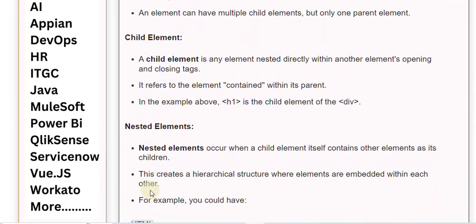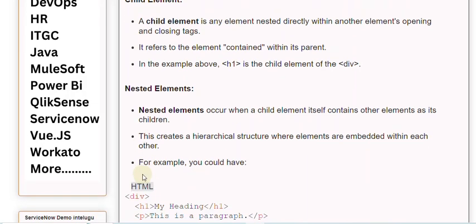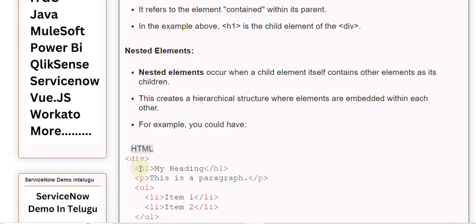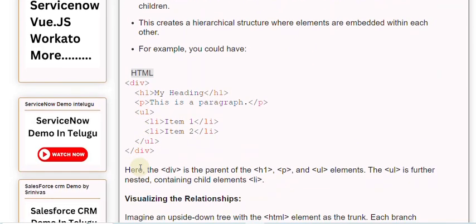Nested elements: Nested elements occur when a child element itself contains other elements as its children. This creates a hierarchical structure where elements are embedded within each other. For example, the <div> is the parent of the <h1>, <p>, and <ul> elements. The <ul> is further nested, containing child elements <li>.